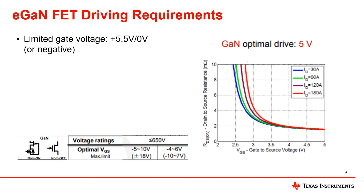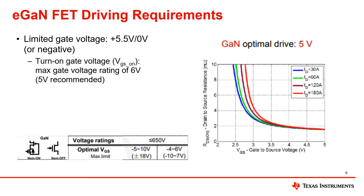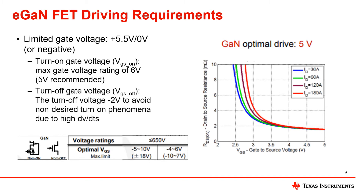Another thing to remember is that GANFETs can be sensitive, so if you don't follow the recommended operating conditions, you may run into some issues in your design. Here you can see that the GANFET has a limited gate voltage range. A typical recommended operating turn-on gate voltage is 5 volts, with 6 volts generally being the maximum value. The recommended gate voltage for turn-off is negative 2 volts, to avoid any non-desired turn-on events that could occur due to high voltage changes. These values may be different depending on the application or part you are using, so we recommend referring to the datasheets to get the best performance out of your designs.